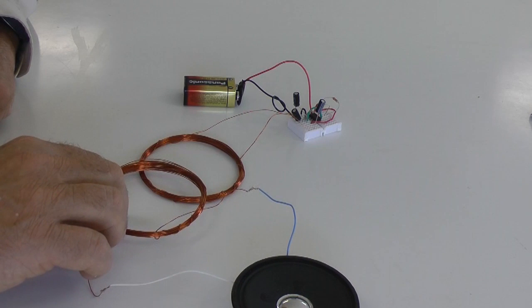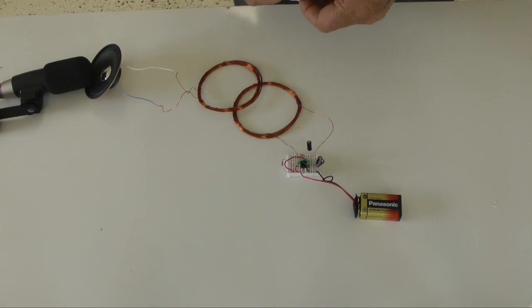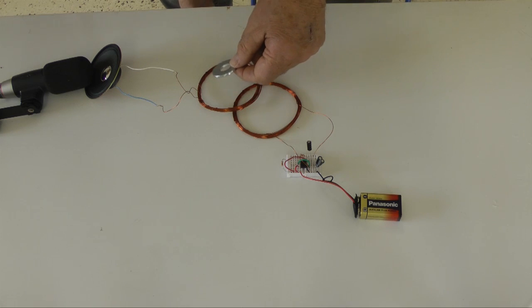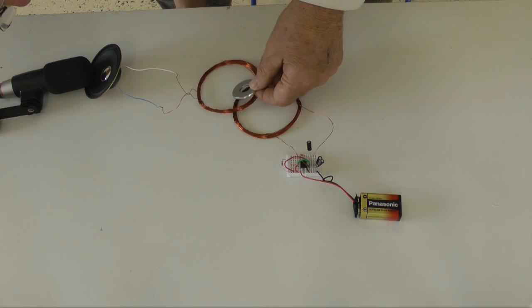This is Bell's induction balance. Bring a piece of metal close to the coils, and the circuit loses balance, becoming unstable and causing a tone in the speaker.